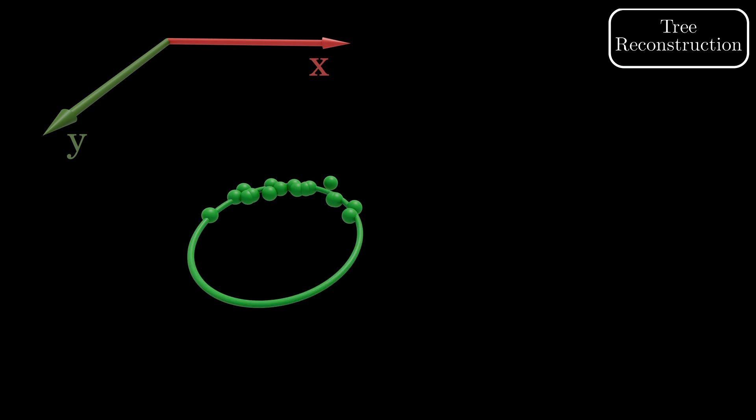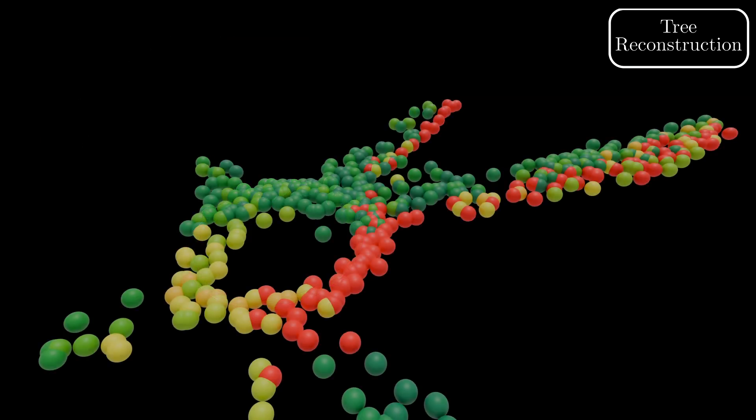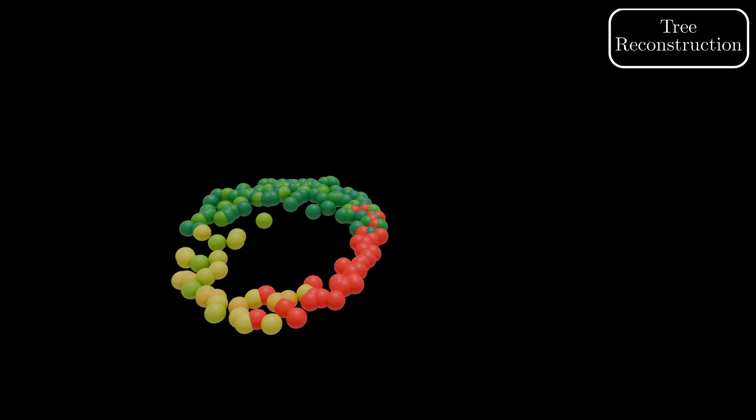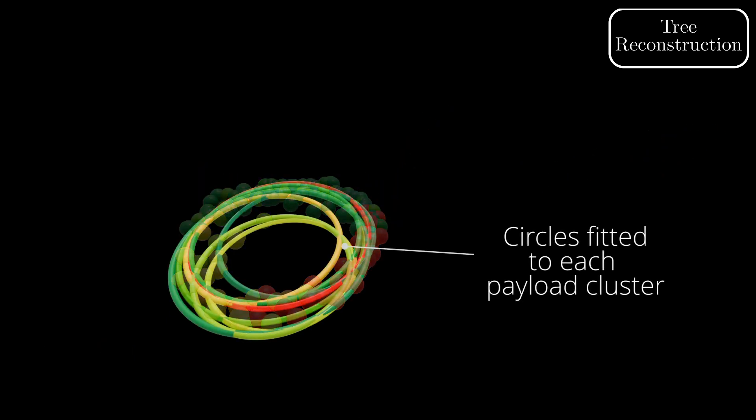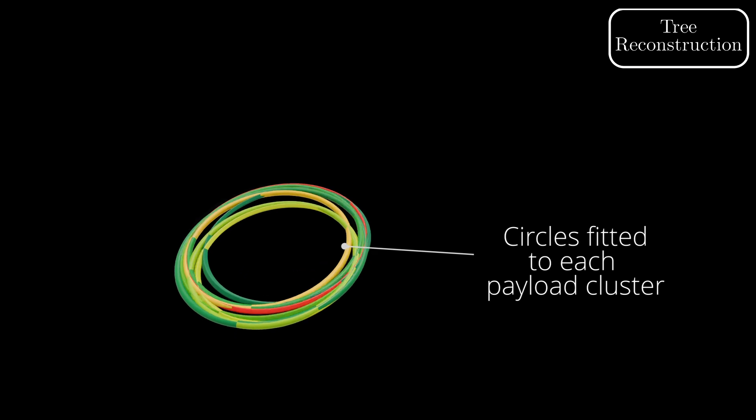To the remaining points, we fit a circle in the least squares sense. After applying this procedure to all payload clusters of the slice, we average the models yielding the final circle fit.